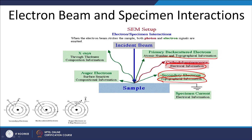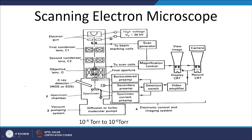Looking at the electron orbit — the nucleus with electrons in K, L, and M orbits (showing K, L1, and L23 here) — whenever an electron is ejected from an inner orbit, it jumps to an outer orbit and you get secondary electrons. The real schematic diagram of a scanning electron microscope is very, very complex. There is an electron gun here which emits the electron beam.